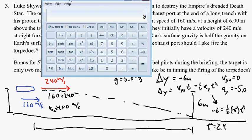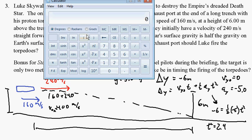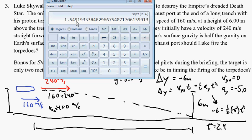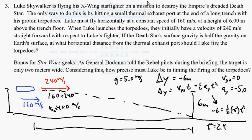Let's get out the calculator — 2.4, square root — okay. So T equals 1.549 seconds.